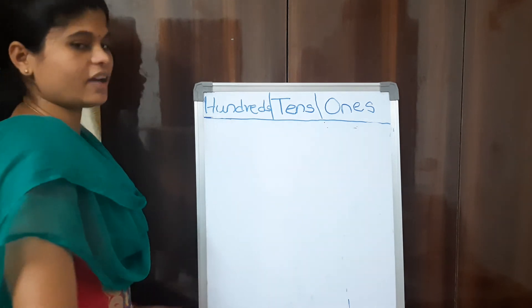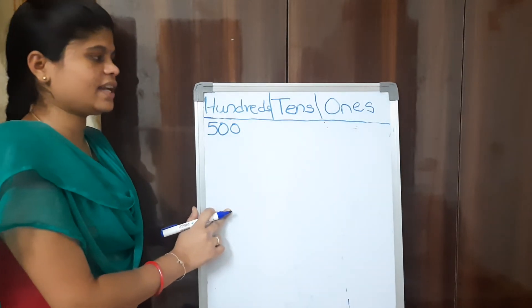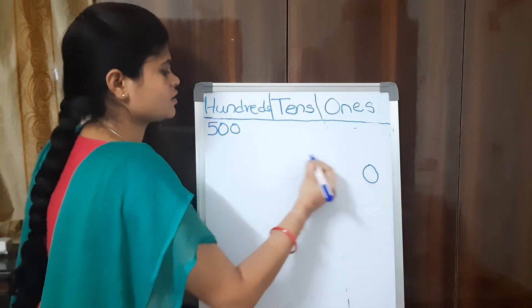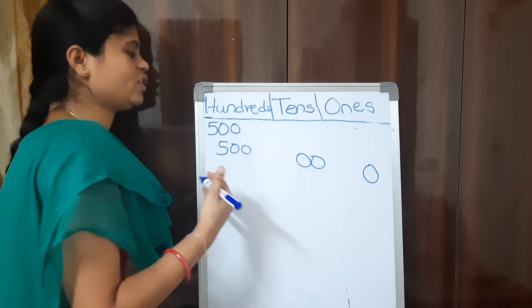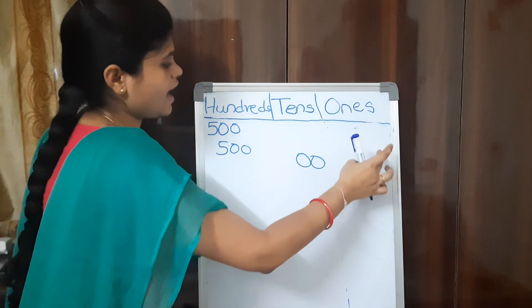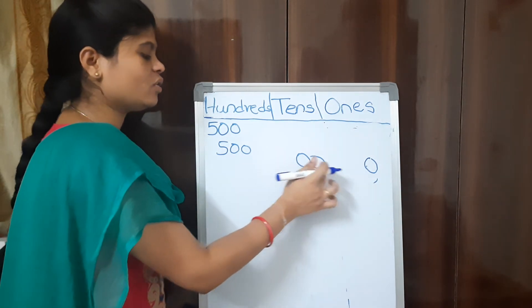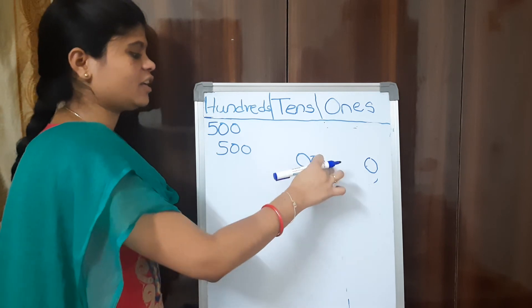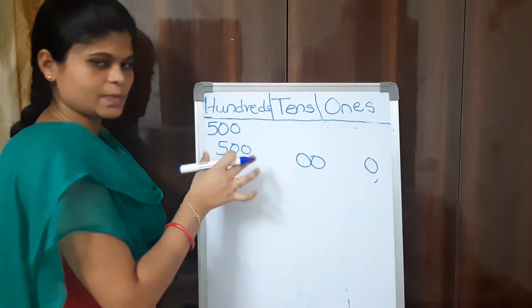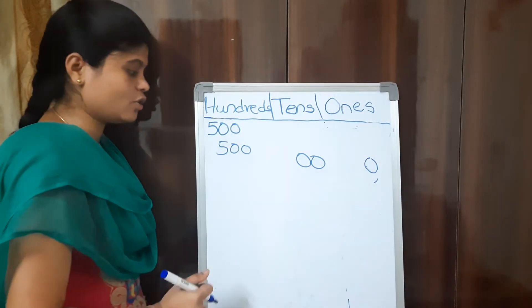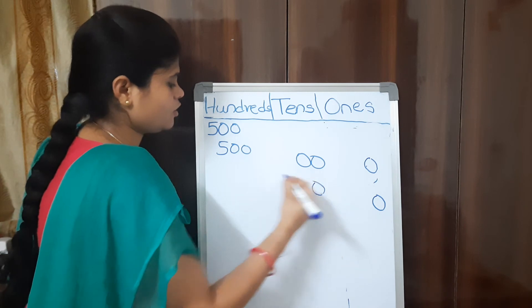Next example: 500. How to write 500 in place values? 0 ones, 0 tens, and 500 in hundreds. Remember: when writing a number in place value, you will have only 1 digit in 1s place, 2 digits in 10s place, and 3 digits in 100s place. In digits, just write the number in that place: 0, 0, 5.